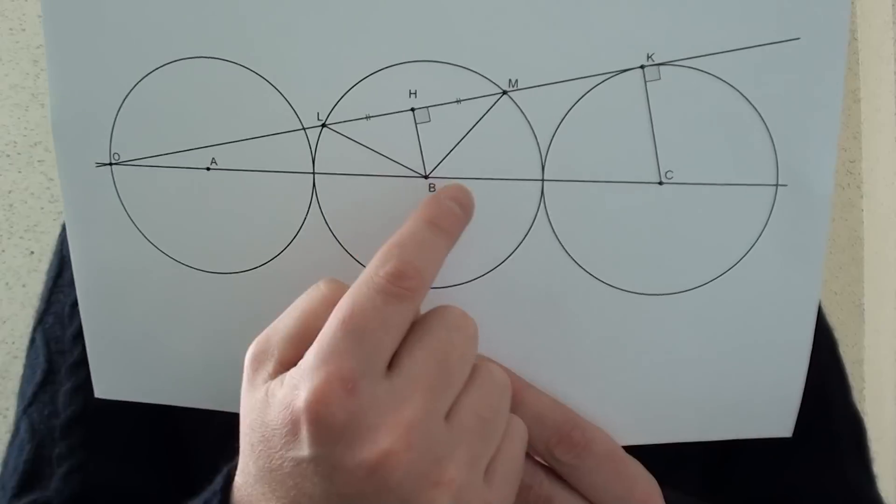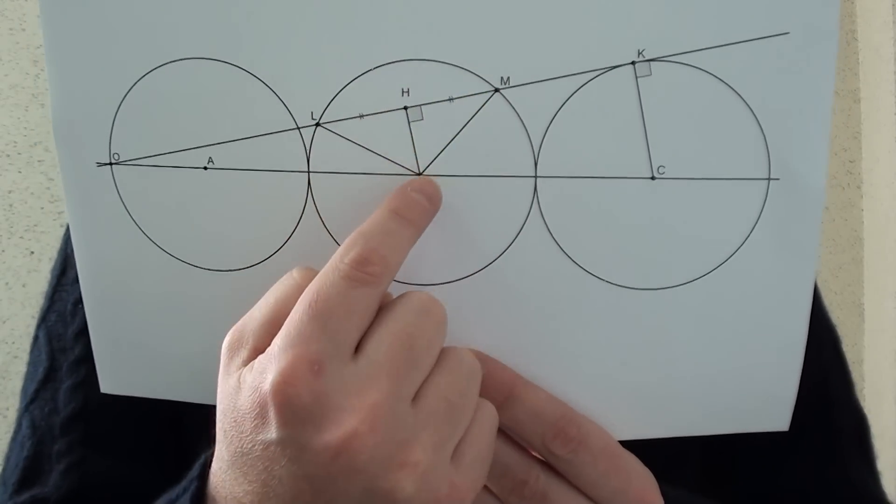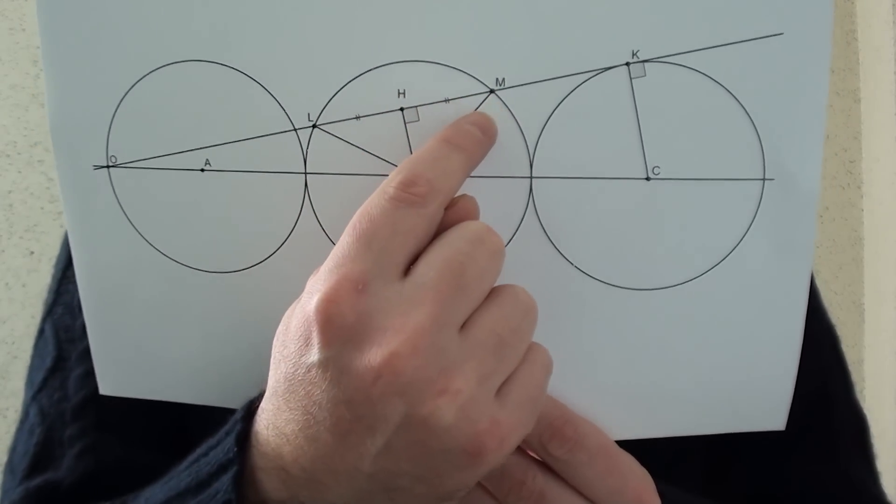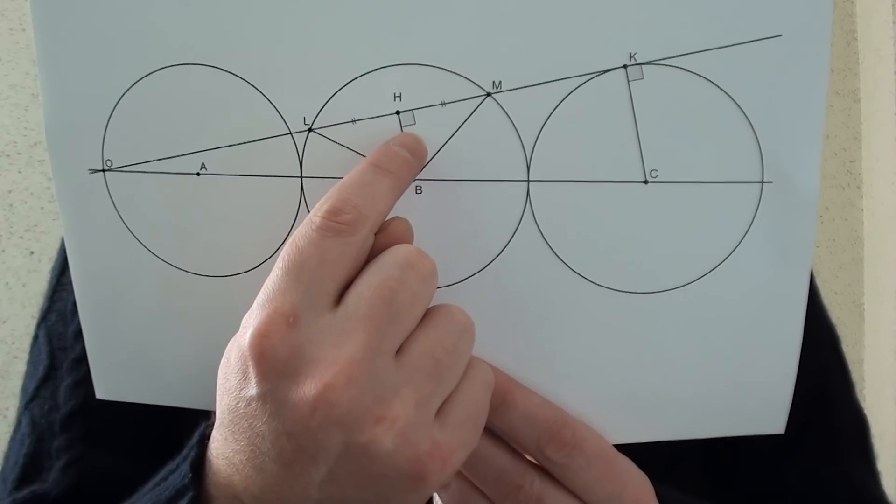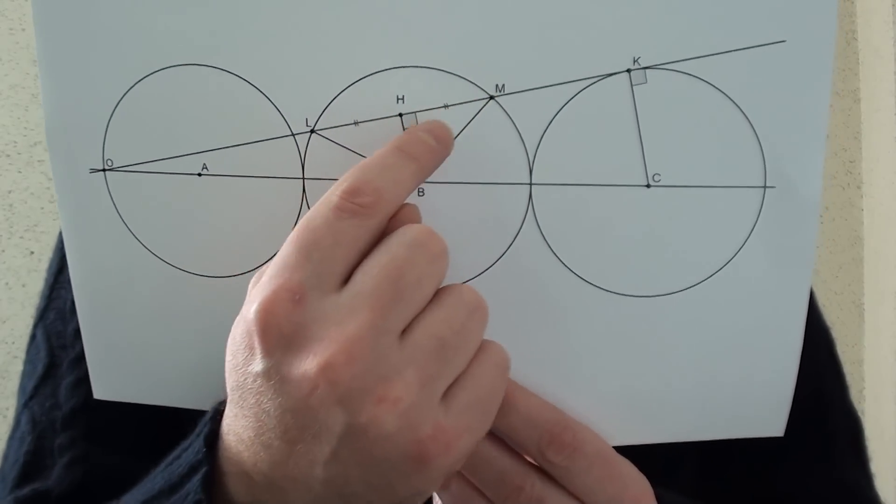We can use the Pythagorean theorem in this BHM triangle to find the third side. We can see that this length, HM is 4.